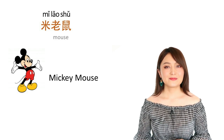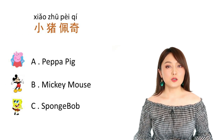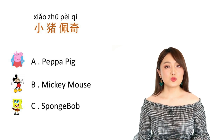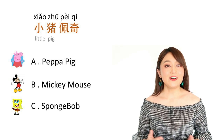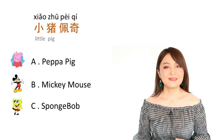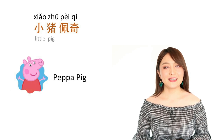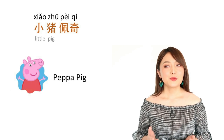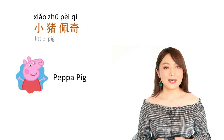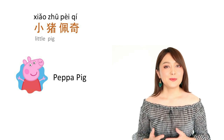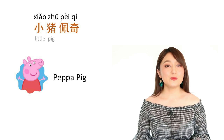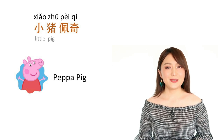好，第二个，小猪配棋。 小 is small, 猪 — pig. That's right, it's Peppa Pig. 配棋 is a Chinese translation of the name Peppa. So 小猪配棋 is Peppa Pig.